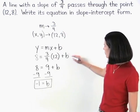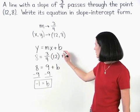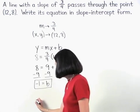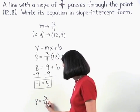And we substitute these values into our formula for m and b to get y equals 3 fourths x minus 1.